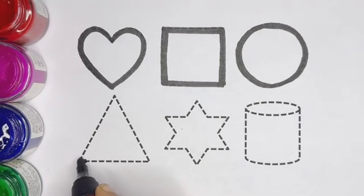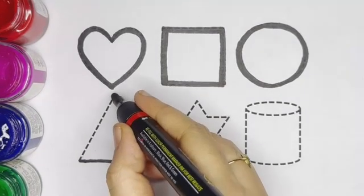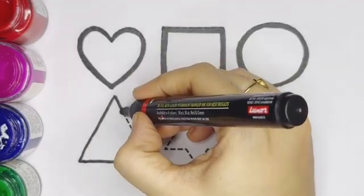Triangle. Kids, triangle has 3 sides, 3 corners.